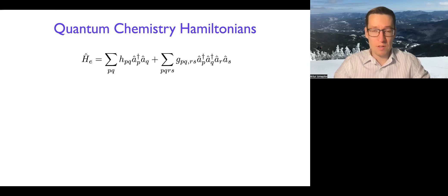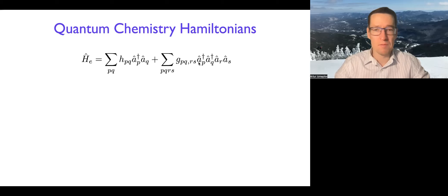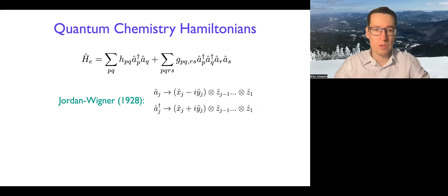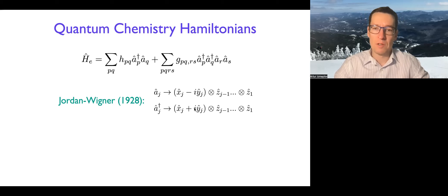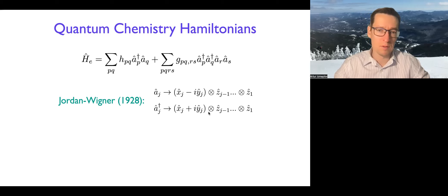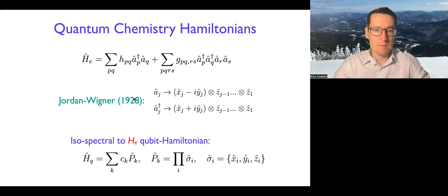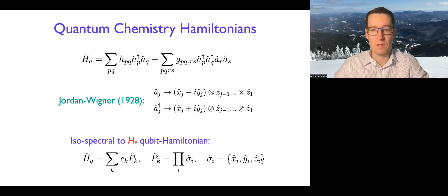Now, the quantum chemistry Hamiltonians we're interested in: we start with a fermionic second-quantized form with one-electron and two-electron components. We obtain them from electronic structure codes and usually use fermionic-to-qubit mappings like Jordan-Wigner. Here X, Y, Z denote Pauli operators with subscripts corresponding to qubits. Doing the Jordan-Wigner transformation, we obtain an isospectral form of the electronic Hamiltonian in qubit space — a linear combination of Pauli products.